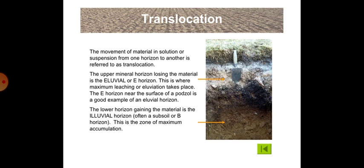Now comes translocation. The movement of material in solution or suspension from one horizon to another is referred to as translocation. The upper mineral horizon losing the material is the eluvial or E horizon, where maximum leaching or eluviation takes place. The E horizon near the surface of a podzol is a good example of an eluvial horizon. The lower horizon gaining the material is the illuvial horizon, often a subsoil or B horizon — this is the zone of maximum accumulation, as indicated by the arrow in the figure.